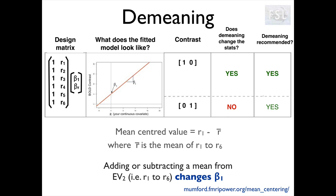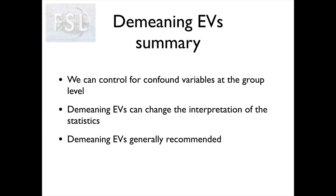And this is also valid for binary variables — yes or no variables. We can assign 1 and 0, calculate the mean across all subjects, and subtract that from each value. So to conclude, we can control for confound variables at the group level. Demeaning EVs can change the interpretation of the statistics, but because in cases where it is not necessary to demean the interpretation doesn't change, demeaning is generally recommended.